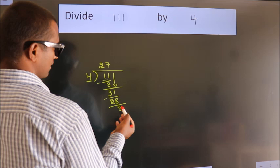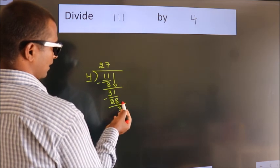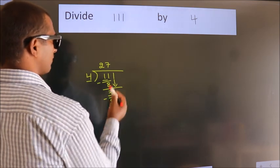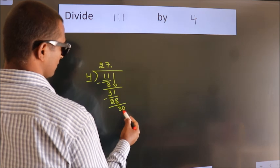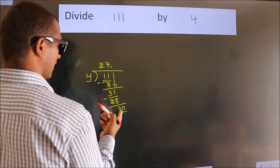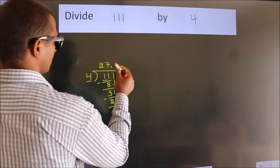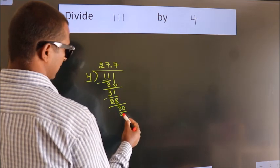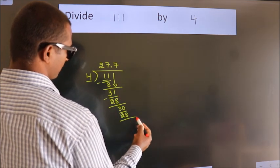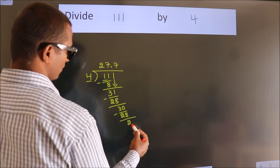After this, no more numbers to bring down. So what we do is we put a dot and take 0. So 30. A number close to 30 in the 4 table is 4 times 7 equals 28. Now we subtract. We get 2.